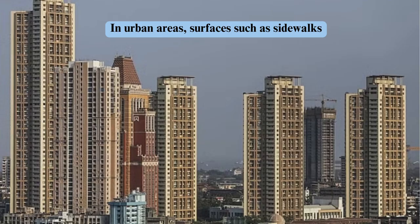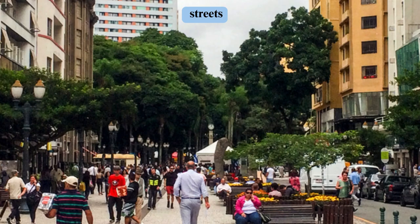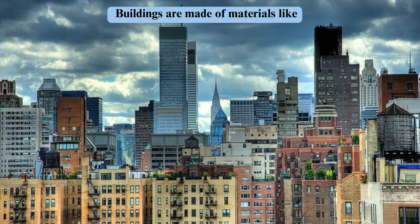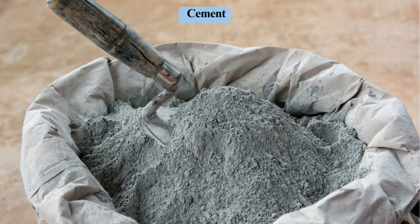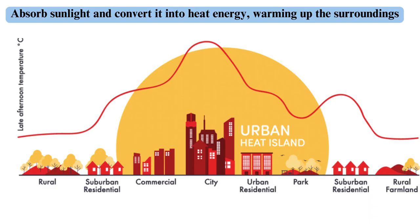However, in urban areas, surfaces such as sidewalks, streets, and buildings are made of materials like cement and asphalt, which absorb sunlight and convert it into heat energy, warming up the surroundings.